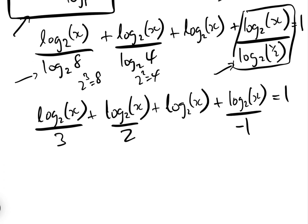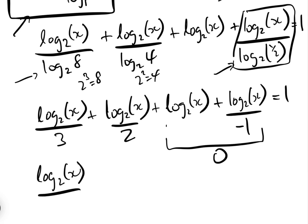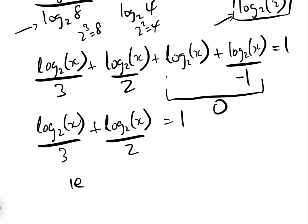So this term becomes log to the base two of x over minus one. Notice that log to the base two of x plus that minus one term gives zero — those cancel out. That leaves us with log to the base two of x over three plus log to the base two of x over two equals one.